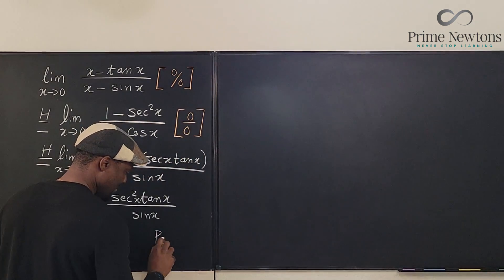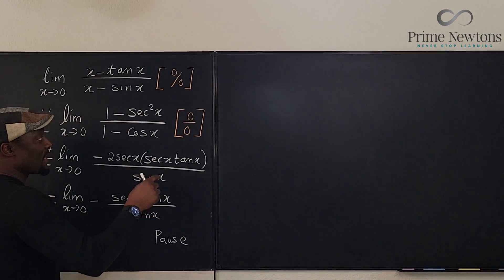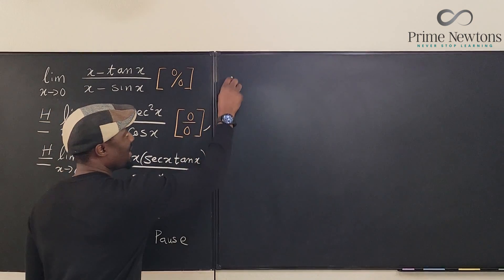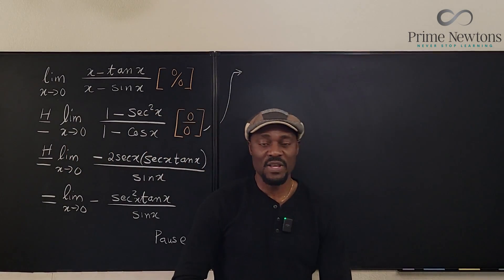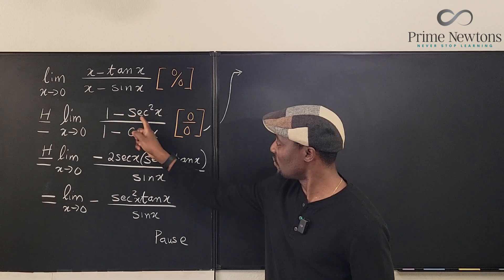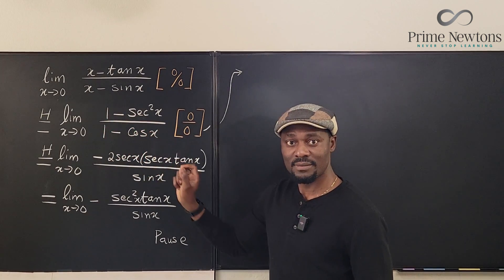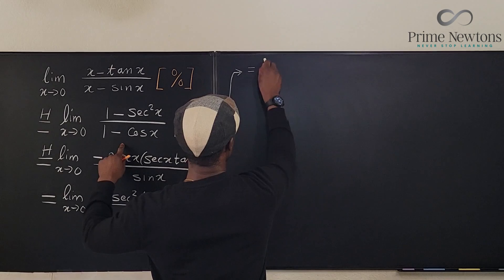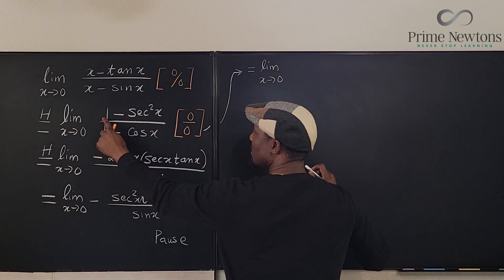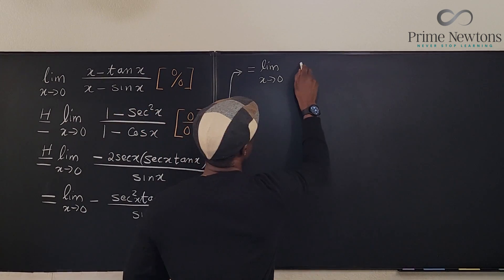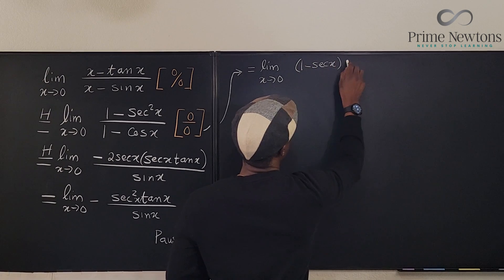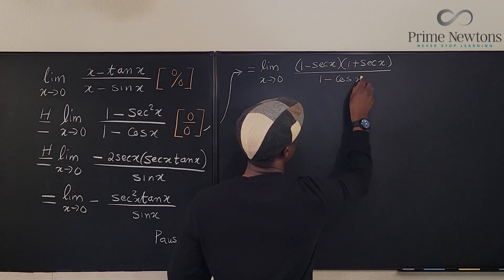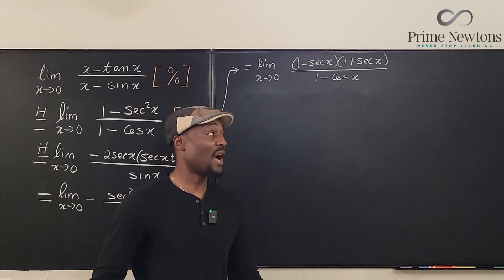So let me take a pause and go back to where we had 1 minus sec²(x) over 1 minus cos(x) — after the first L'Hôpital's application. Let's see what we could have done without L'Hôpital's rule. This looks very useful because 1 minus sec²(x) is a difference of two squares.